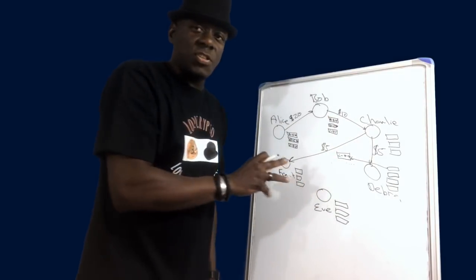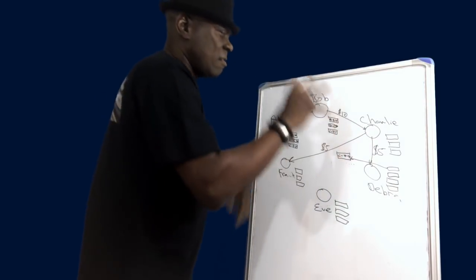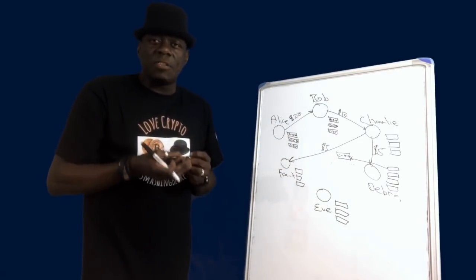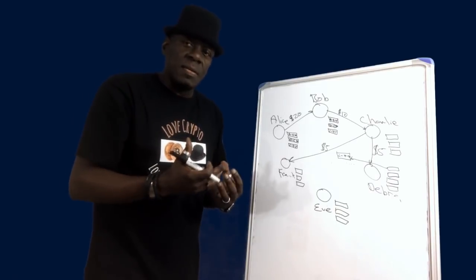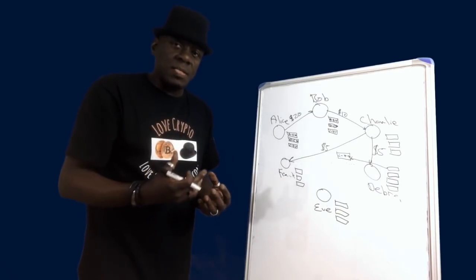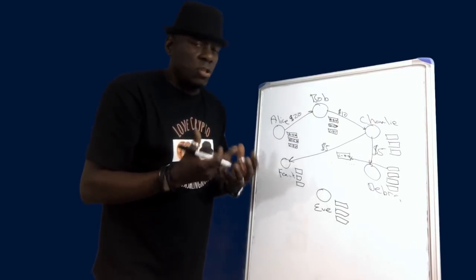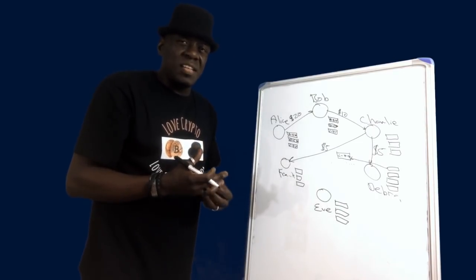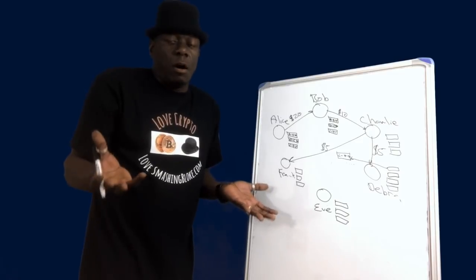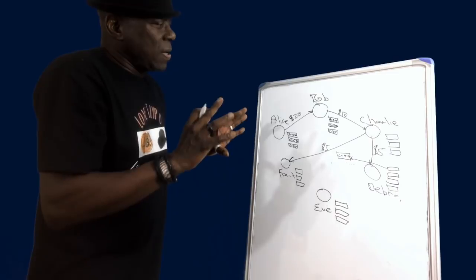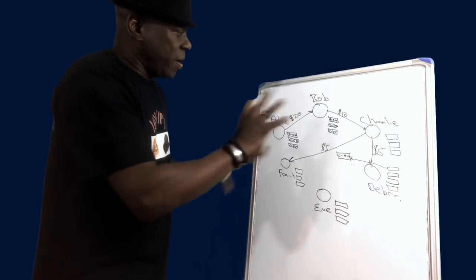The challenge with proof of work, the big challenge with proof of work, is the electricity used to generate the random keys. It has been said that the amount of electricity used by certain blockchains is enough to power a country like Hungary.